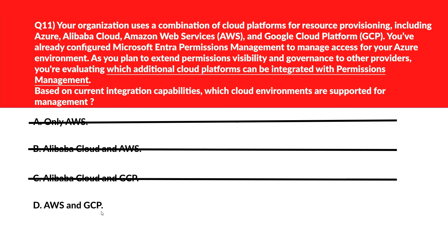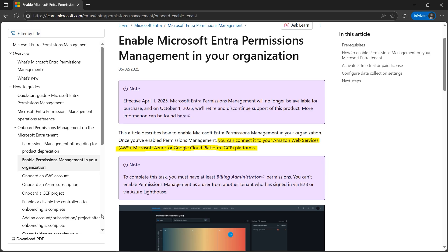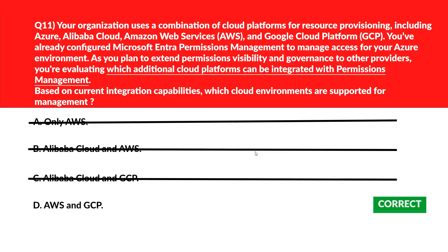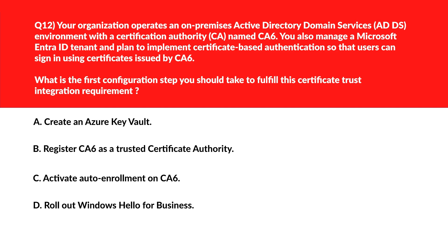We're left with option D: AWS and GCP. Microsoft Entra Permissions Management supports multi-cloud entitlement management across AWS, Azure, and Google Cloud. The official documentation confirms you can connect it to AWS, Azure, and GCP platforms. Option D is the right answer.